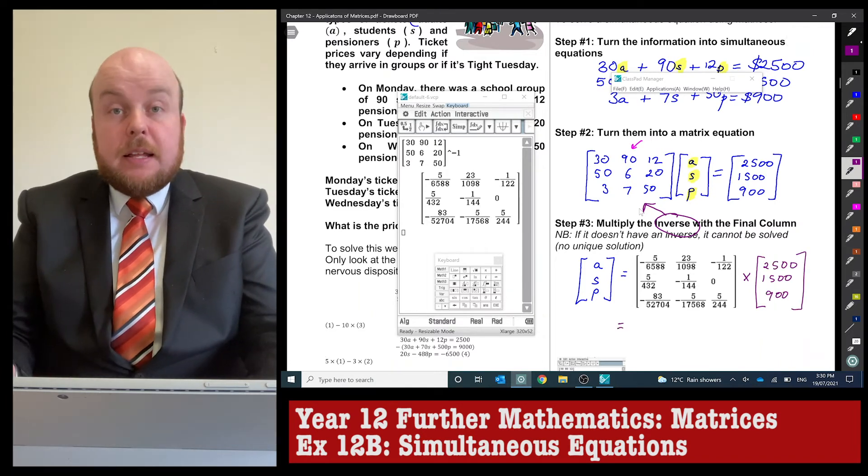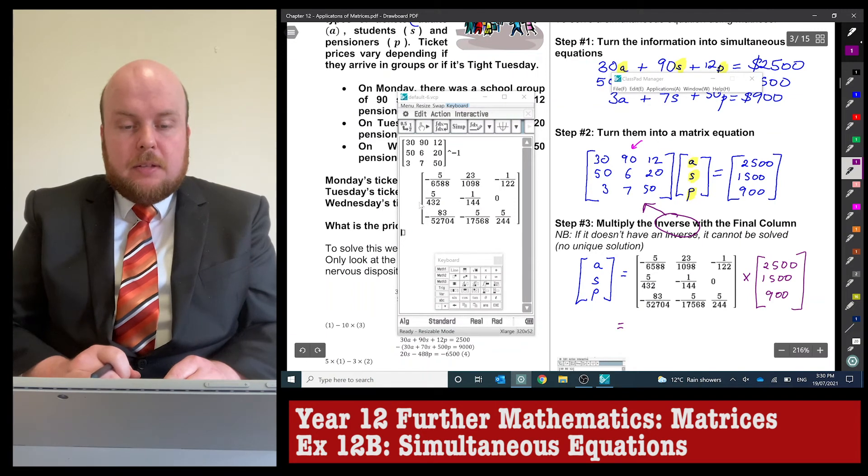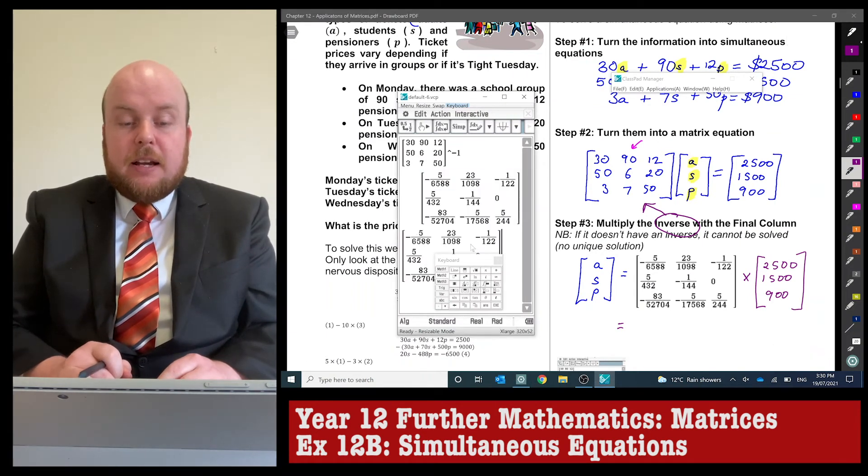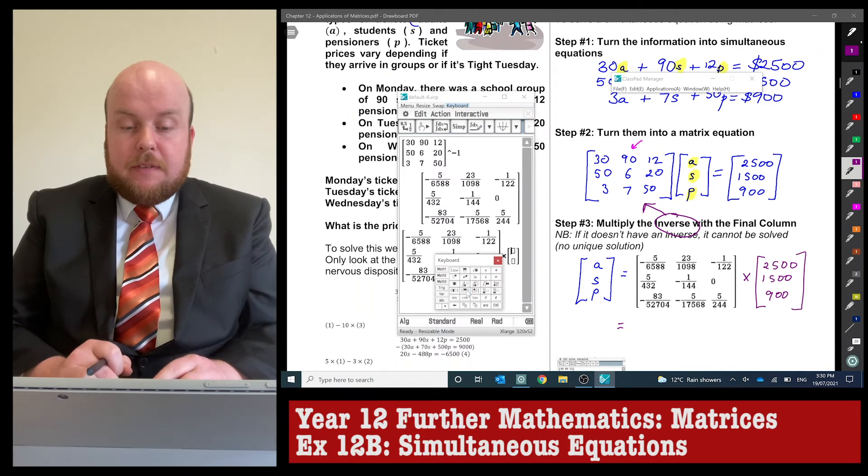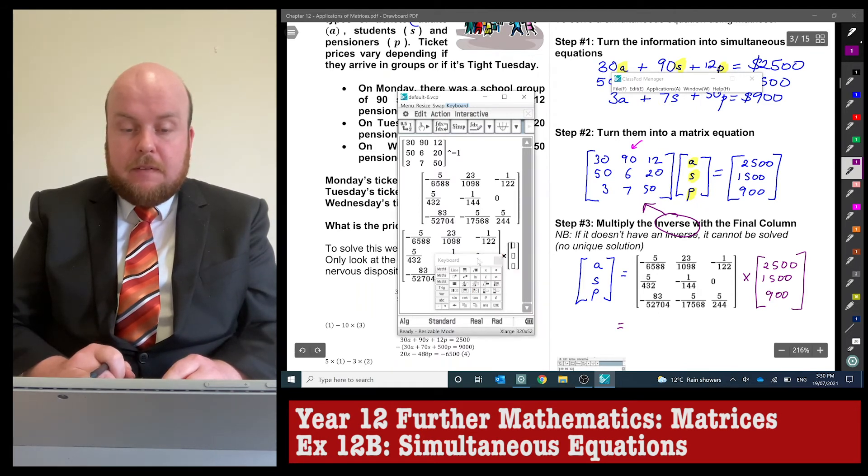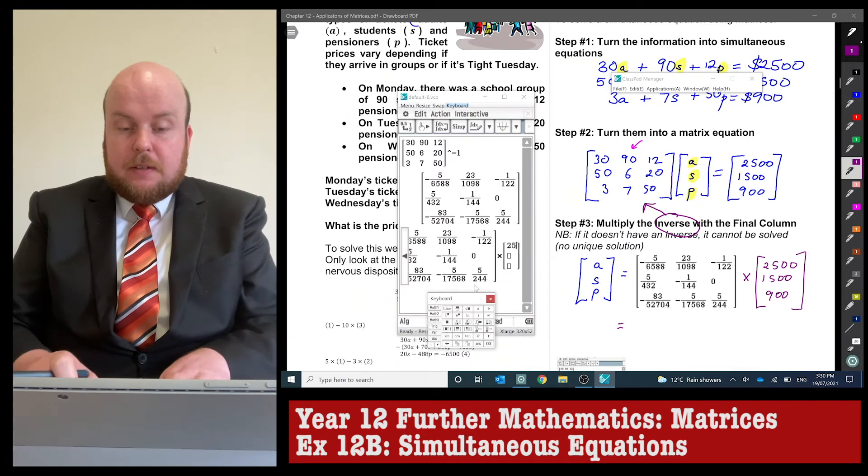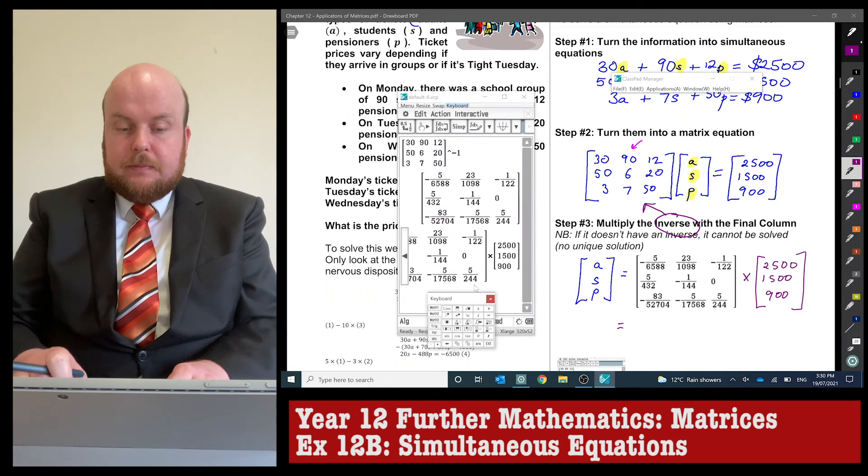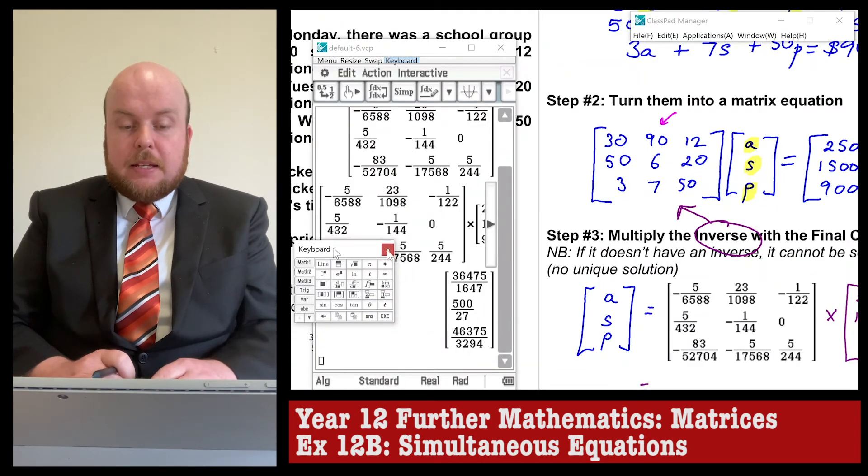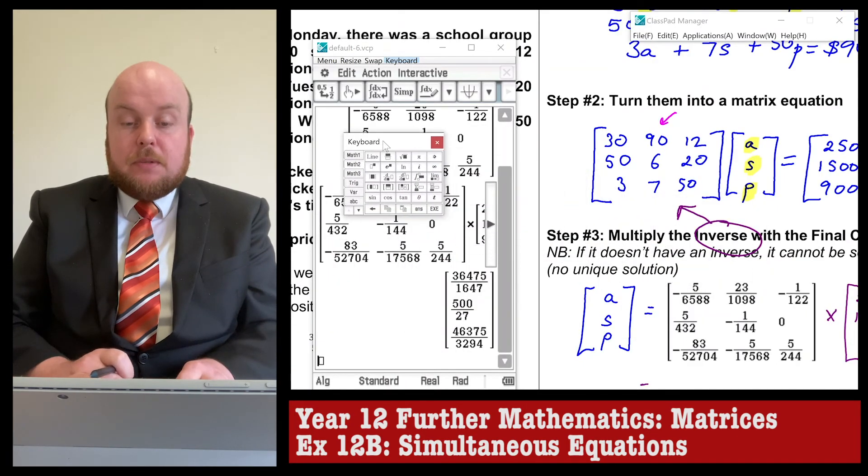All I need to do is multiply by that final matrix. The final answer will be those two matrices multiplied. I'm going to highlight and copy that matrix we found the inverse of, and multiply it by that column matrix, the final answer one: 2,500, 1,500, and 1,900.